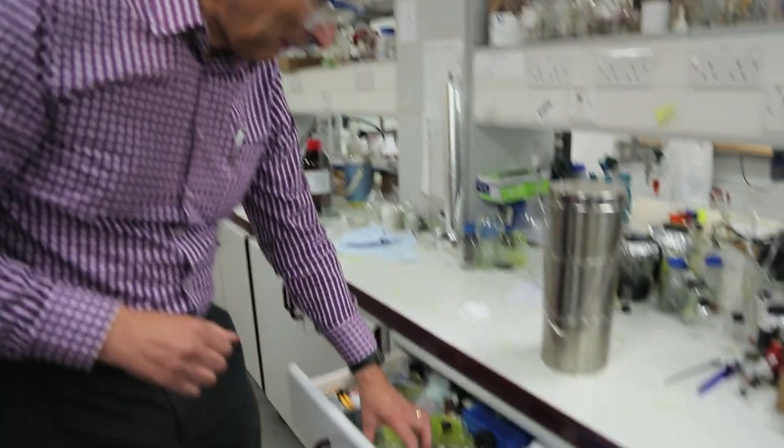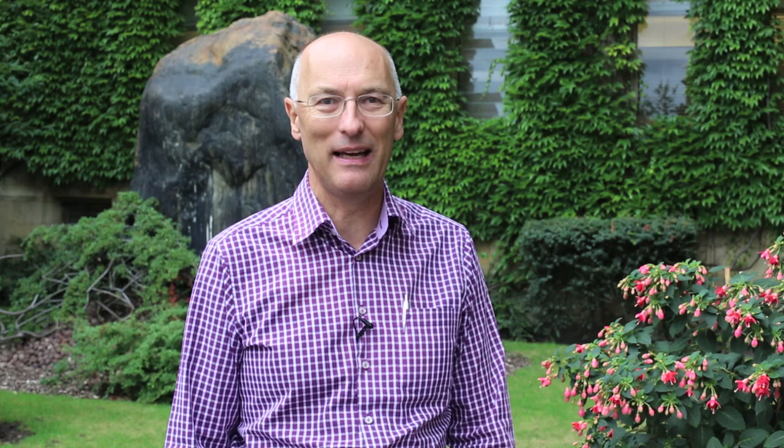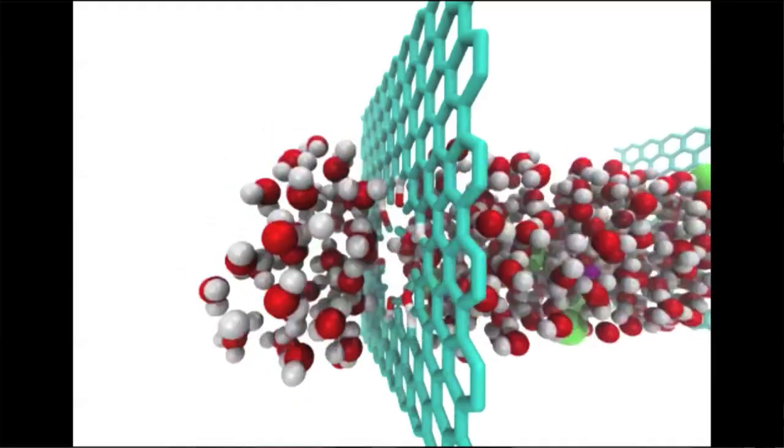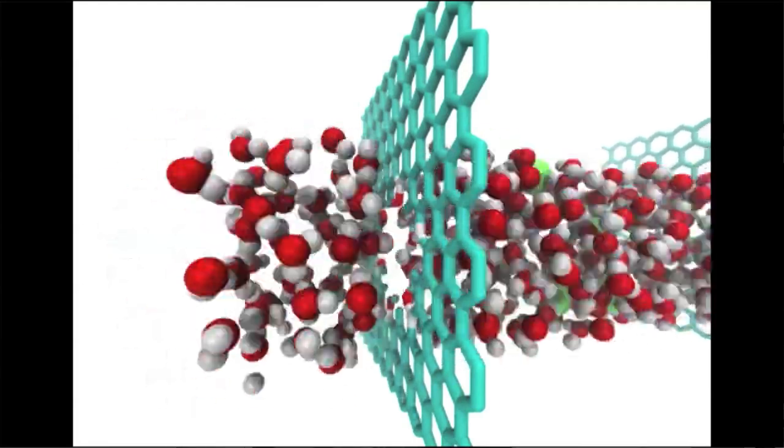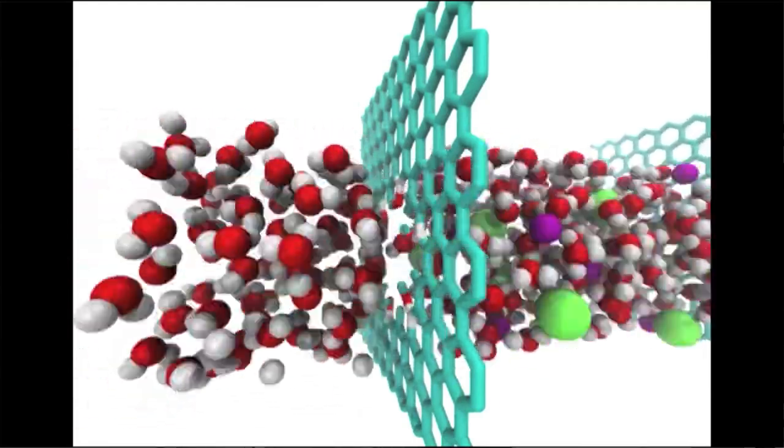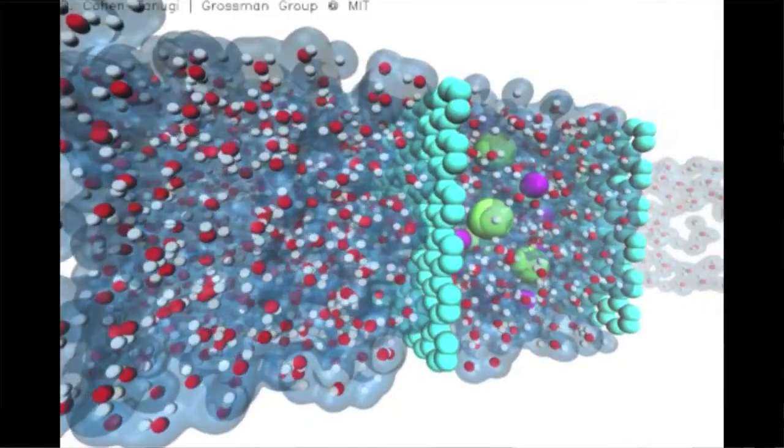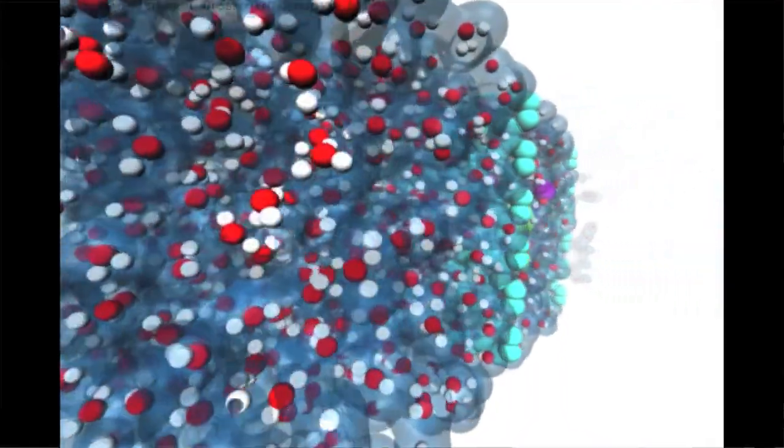Graphene oxide was shown by Rahul in the physics department here to have high permeability to water, but to be an effective barrier to all kinds of other things. One of the ideas is to use graphene as a type of nanomembrane or filter. And that harnesses the fact that graphene is very impermeable. Even very light gases don't pass through.